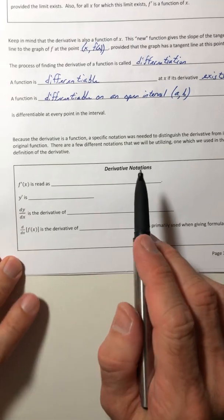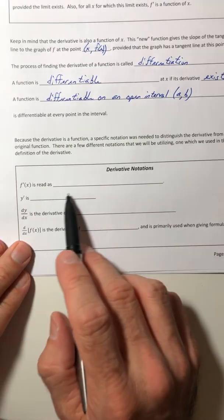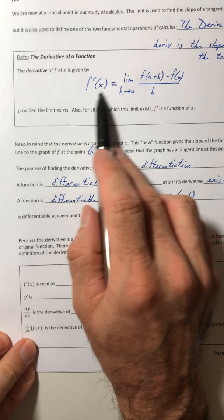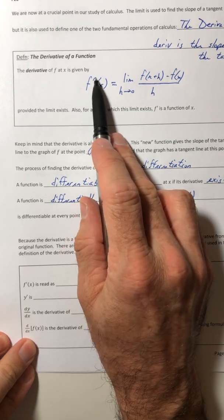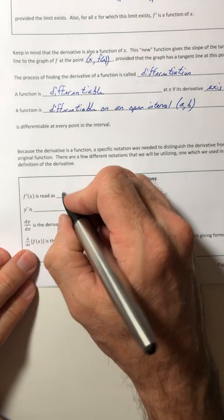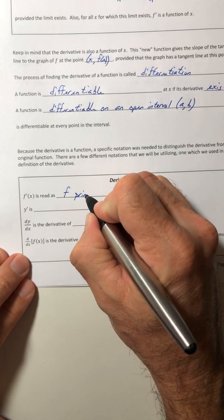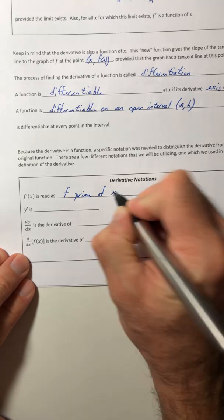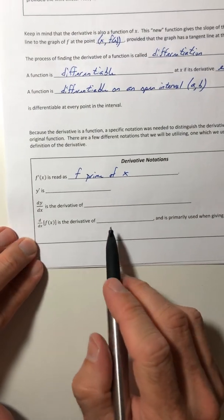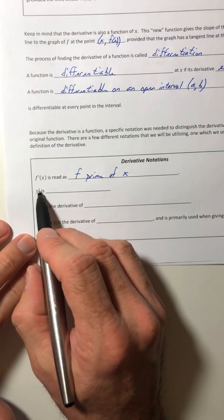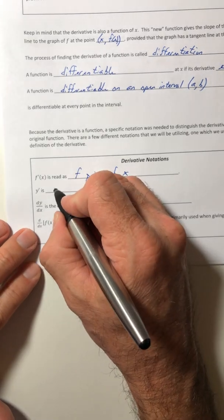So now let's talk about the notation. So we said before, up in that definition, that f with that little apostrophe - that is read as f prime of x. So if you see a y with that little apostrophe, that is y prime.